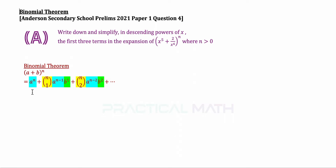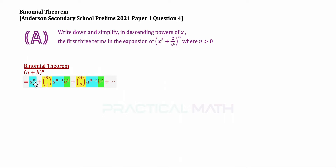All the a terms are highlighted in blue, with powers decreasing: a to the power of n, a to the power of n minus 1, a to the power of n minus 2. The powers of b are slowly increasing: b to the power of 0, b to the power of 1, b to the power of 2, and so on. The coefficients highlighted in yellow — nc0 equals 1, nc1, nc2, and so on — are known as the binomial coefficients.